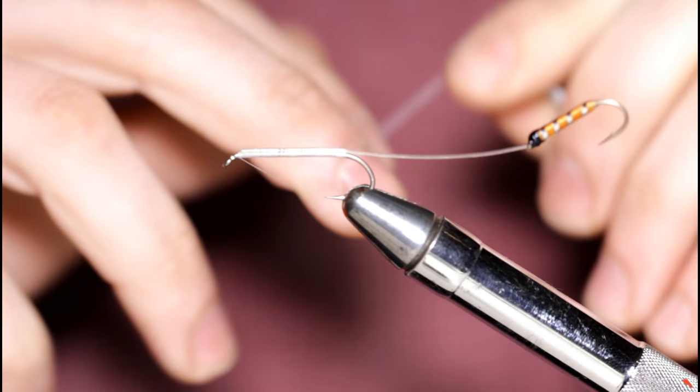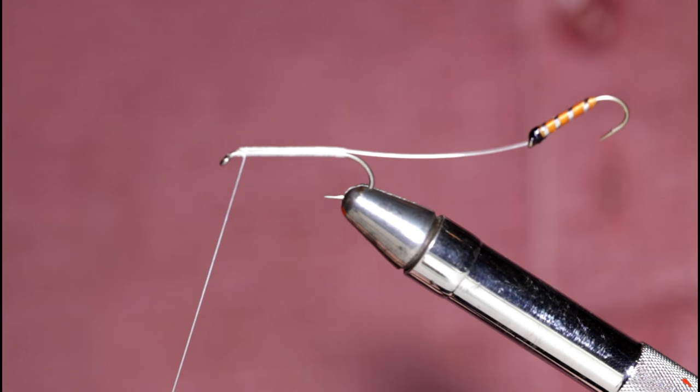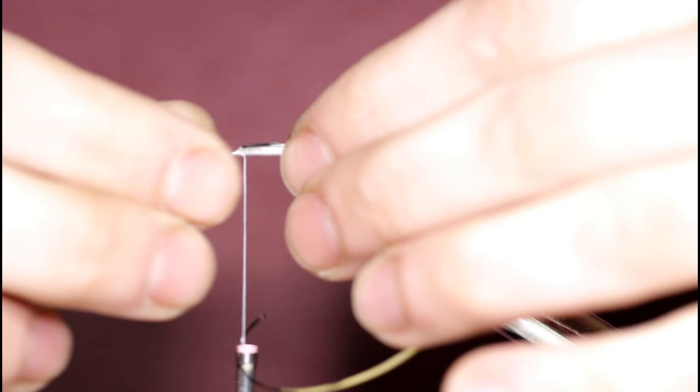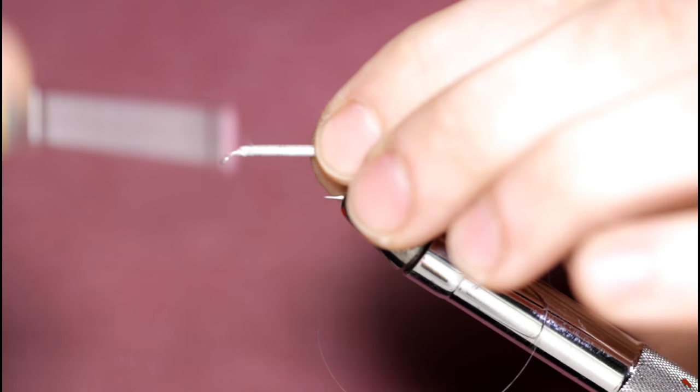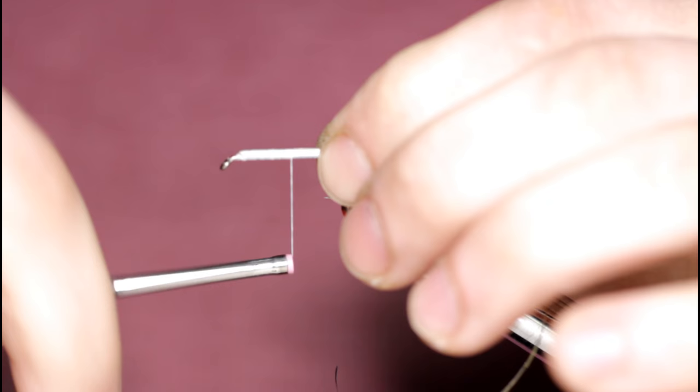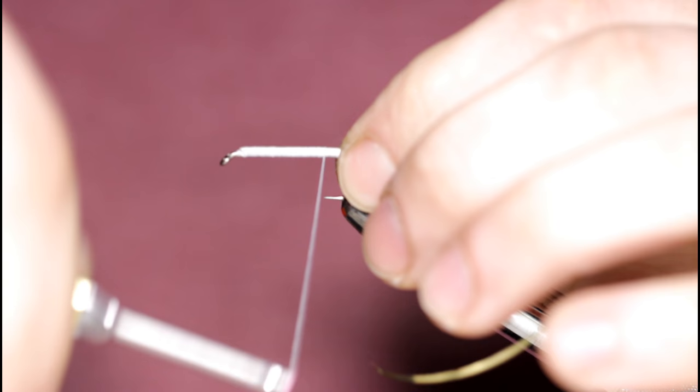Then I'm going to come in with some silver tinsel. It's going to be small silver tinsel again. Now I'm just going to wind this down towards the barb. And once I get down here, I'll grab another section of orange floss.